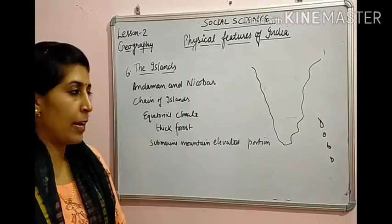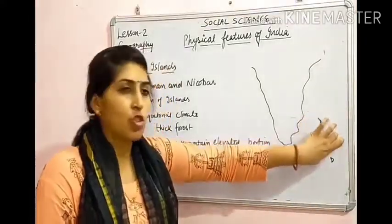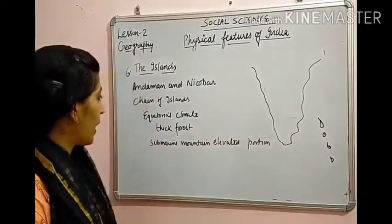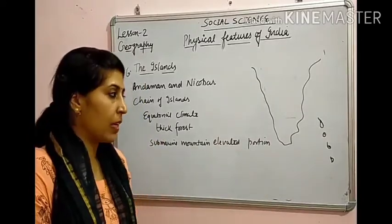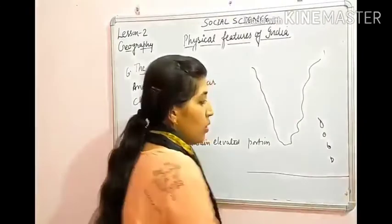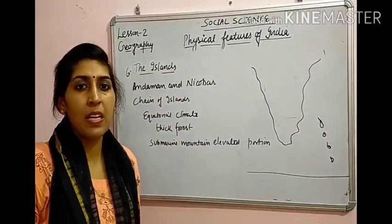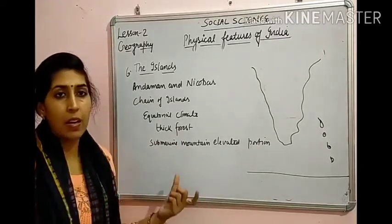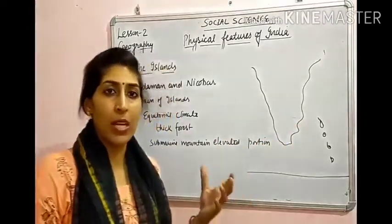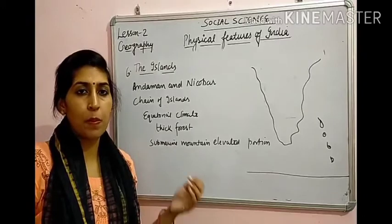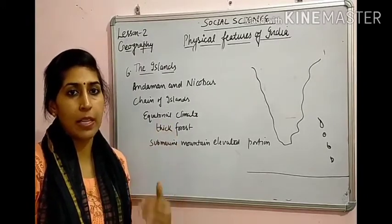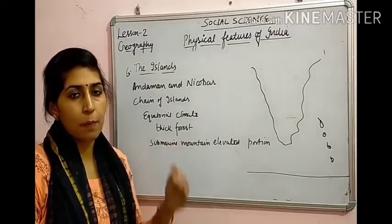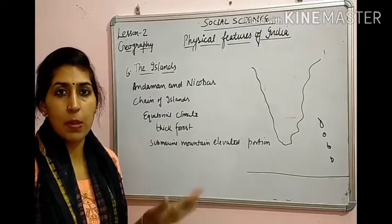Andaman and Nicobar Islands Bay of Bengal में हैं — यह island groups की एक chain है। North में Andaman है और South में Nicobar Island। यहाँ equatorial climate मिलता है — ज्यादा humidity, ज्यादा temperature, ज्यादा rainfall — और dense forests भी हैं। Andaman and Nicobar submarine mountains से बने हैं — volcanic eruption की वजह से mountains बने जो पानी में डूब गए और उनकी peaks ही islands बन गईं।